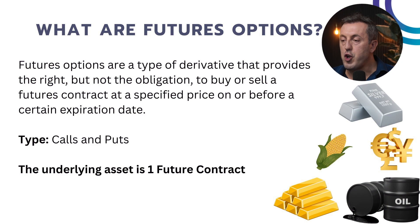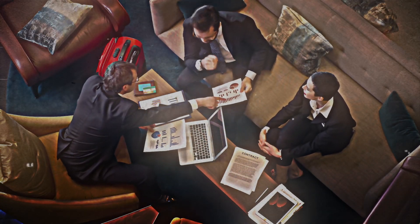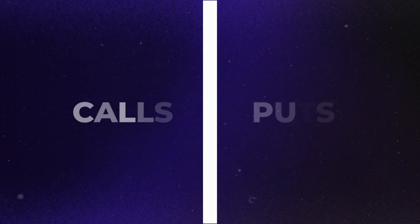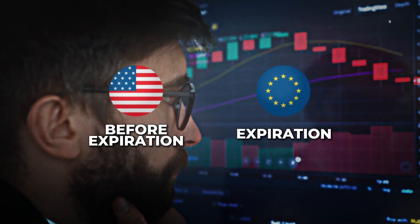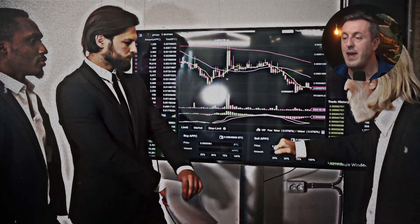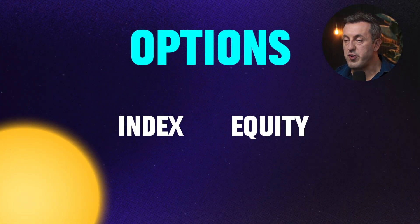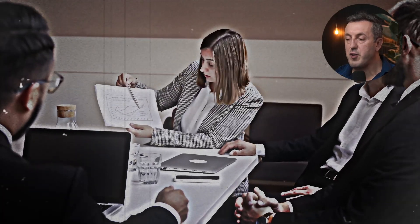So what are futures options? Futures options are a type of financial derivative that grants the holder the right but not the obligation to buy or sell one futures contract at a predetermined price within a specified timeframe. These options combine features of futures contracts and standard options, and they allow investors and traders to speculate or hedge against future price movements of various assets, including commodities, currencies, and financial instruments. Like all options, they come in two forms: calls and puts. Each has a strike price and an expiration date. These options can be exercised any time before expiration if they are American-style, or only at expiration if they are European-style. Upon exercise, the holder takes a position in the underlying futures contract, which can then be held to maturity, closed out early, or allowed to settle. The only difference from index and equity options is that the underlying is the futures contract, and one futures options contract gives exposure to one futures contract.